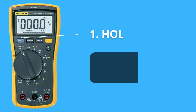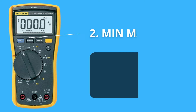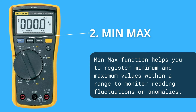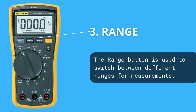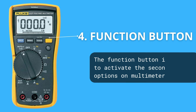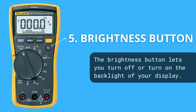The first symbol represents the hold button, which stops your measurement result. The min-max symbol will help you determine the minimum and maximum measured value. The following symbol is used to change the measurement unit. The function button is also known as the unit change button.